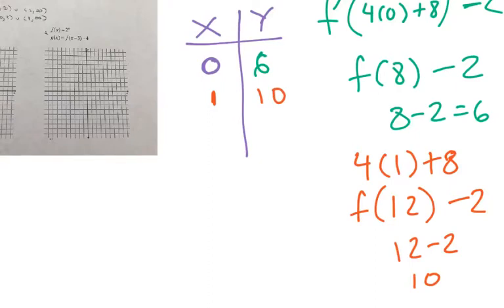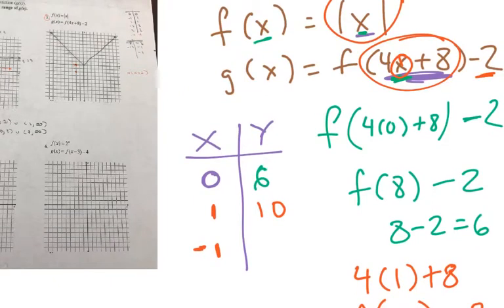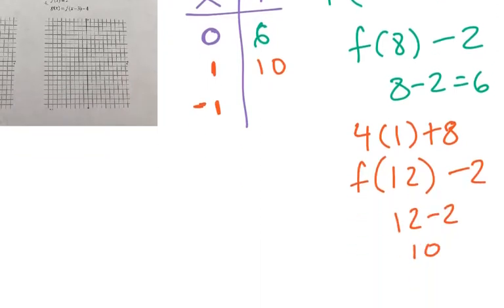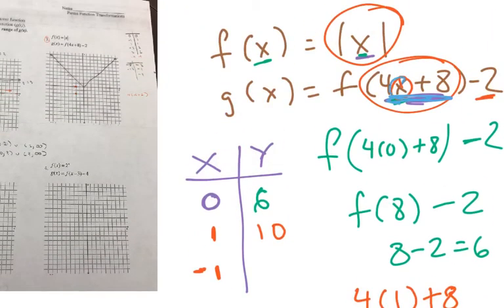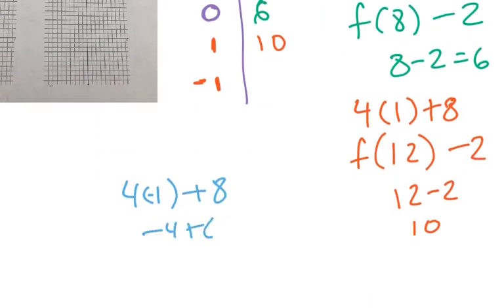Let's go with negative 1. So now we're going to use negative 1. We're going to plug in here. So we're going to do 4 times negative 1 plus 8. Here I'm plugging in x is negative 1. And I get negative 4 plus 8, which is 4.